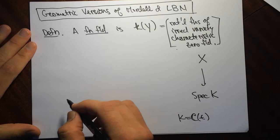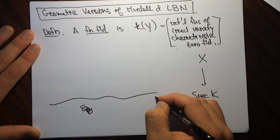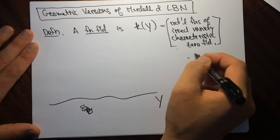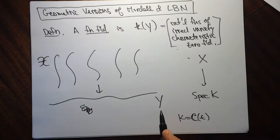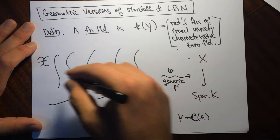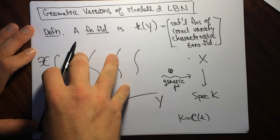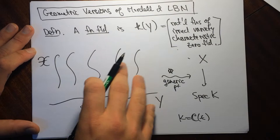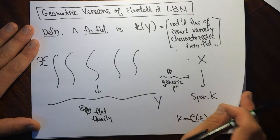So we have this curve Y, and K is the function field of Y. When we take the equations and spread them out, we're going to get a family — a fancy X — which is like a family of varieties sitting above Y. We get this situation by looking at the generic point, the scheme-theoretic point of this family. This is usually a flat family, and it describes the geometric situation where we're working over a field.